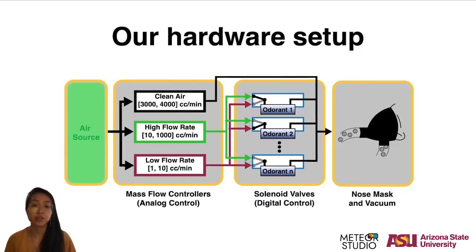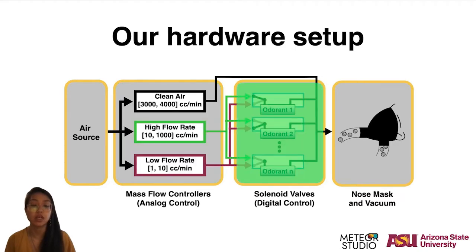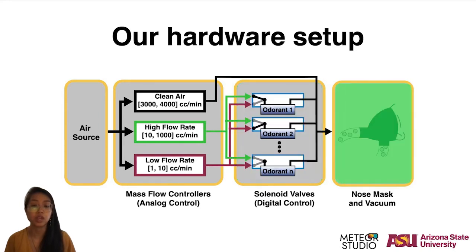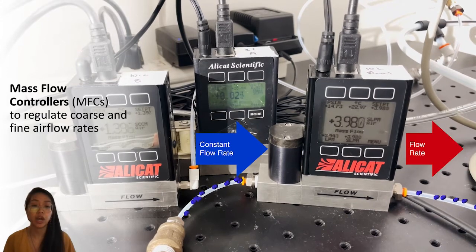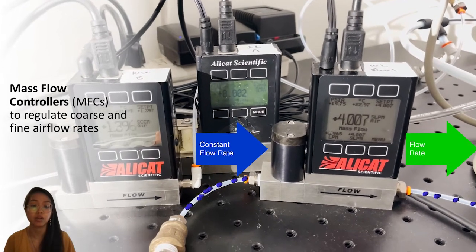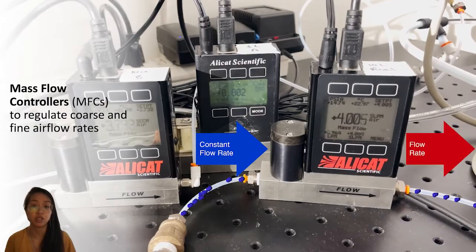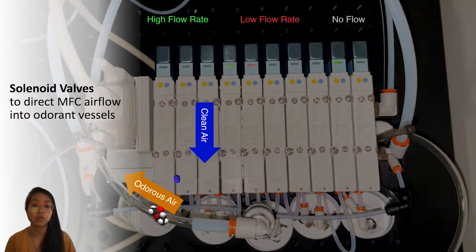For our hardware design, we have an air source that constantly feeds air into a series of mass flow controllers, or MFCs. The MFCs regulate airflow rate into a set of solenoid valve devices, directing airflow into and out of a jar's headspace that contains the odorant's vapor. Through a series of mechanisms, we have mass flow controllers that govern the low flow and high flow paths. Each MFC is chosen to provide precise flow rate control in a different concentration regime, and by combining them, a high dynamic range is achieved. The solenoid valves direct the output of each vessel pneumatically to one of three paths: high flow, low flow, or no flow.